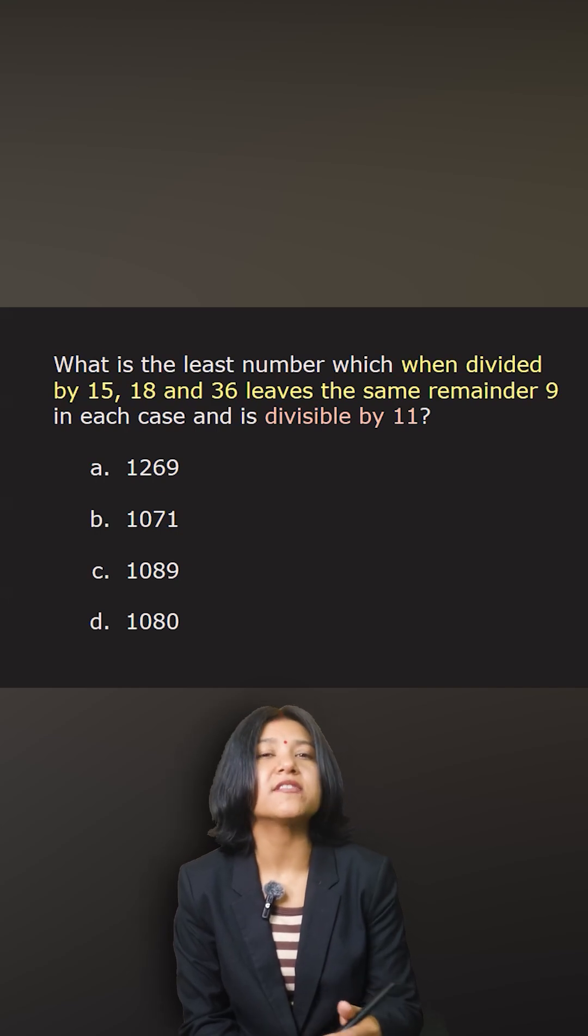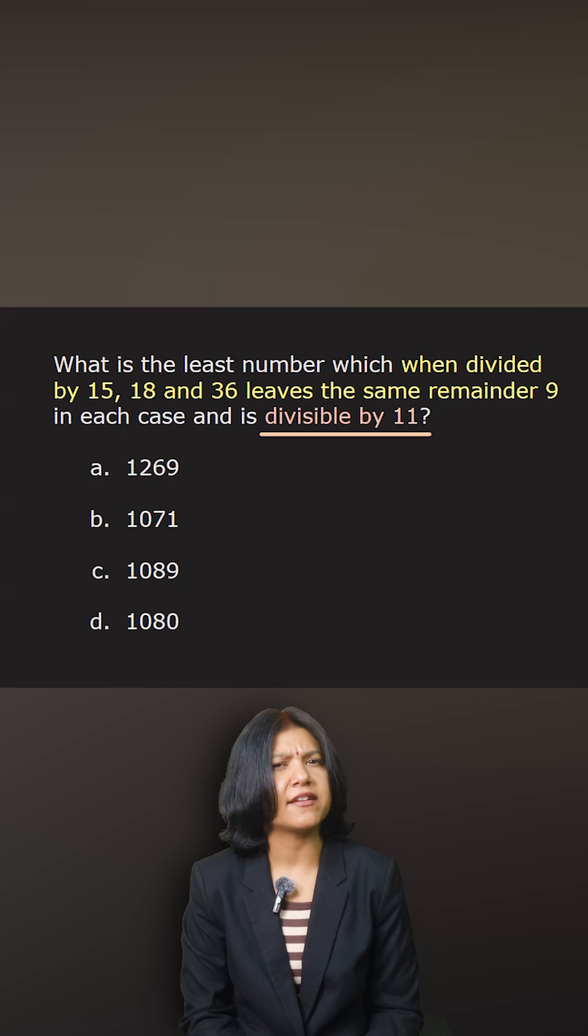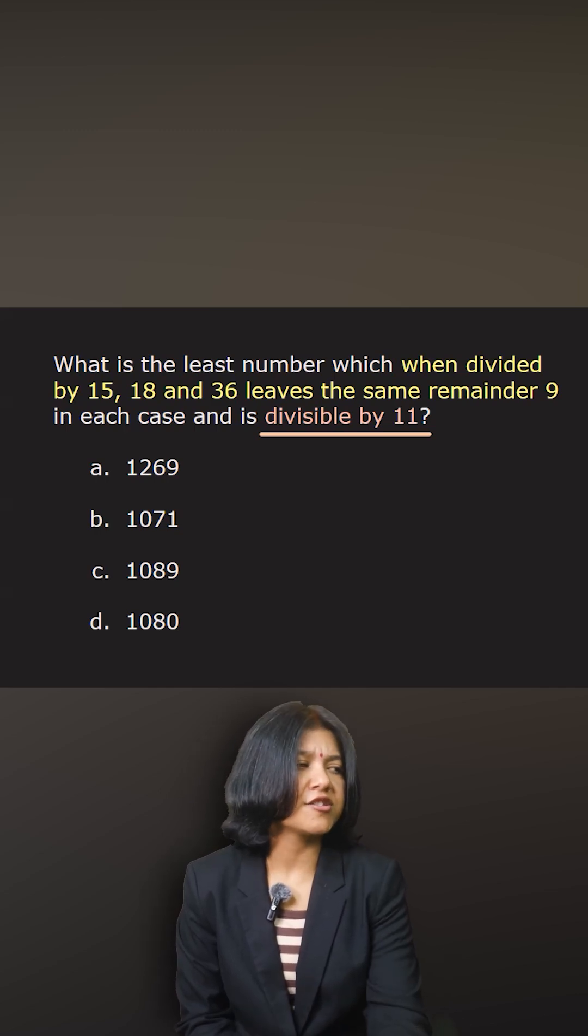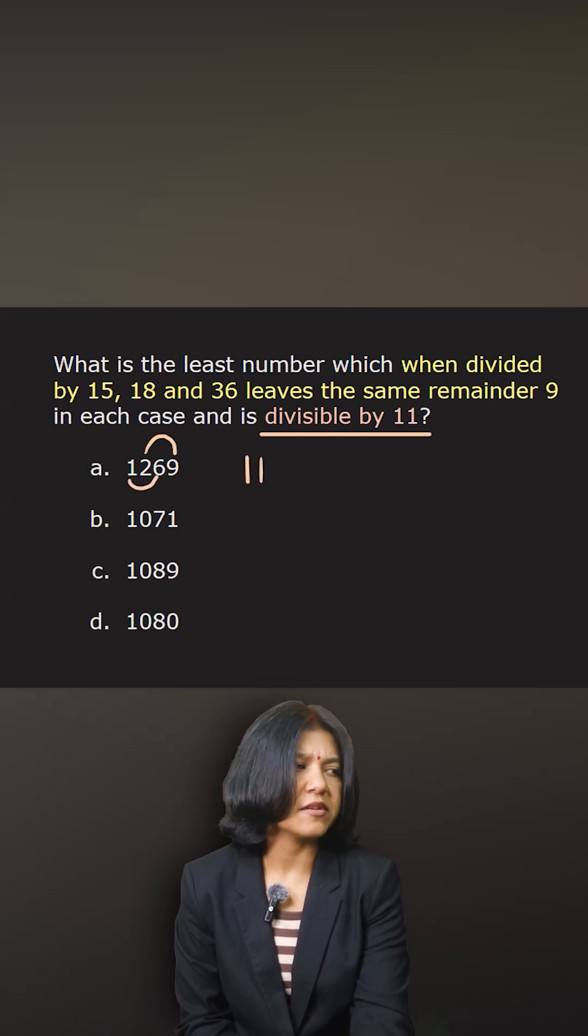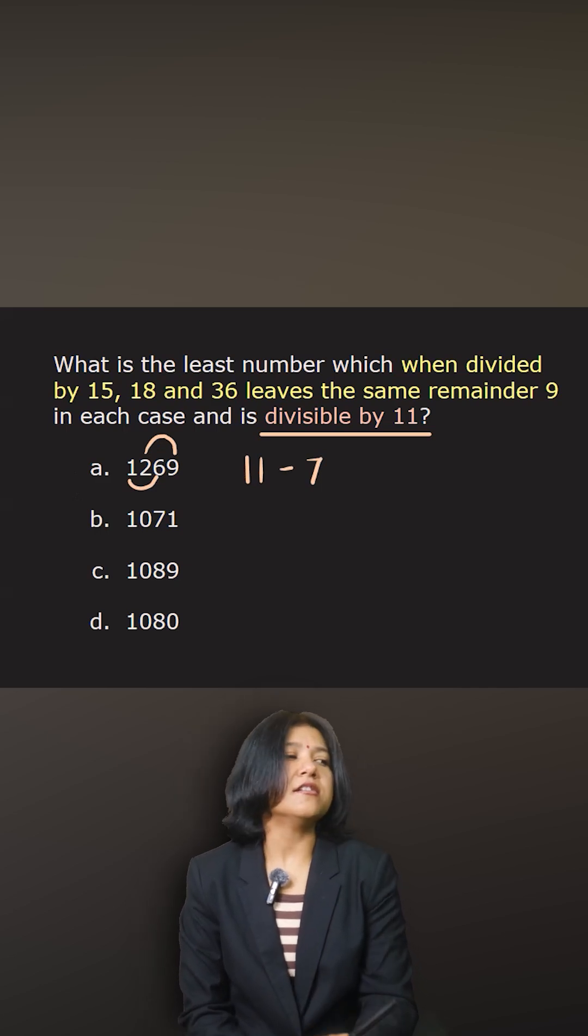First, if you look at the first option, how do you check that? You look at the digits at the alternate places and add them up. In this case it's 11, and the other set here is 6 plus 1, which gives me 7. So 11 minus 7—you find the difference of the sum, and then the difference has to be a multiple of 11, which is clearly not.